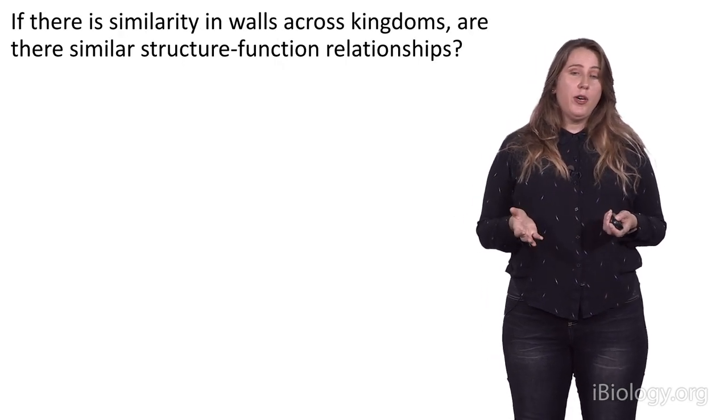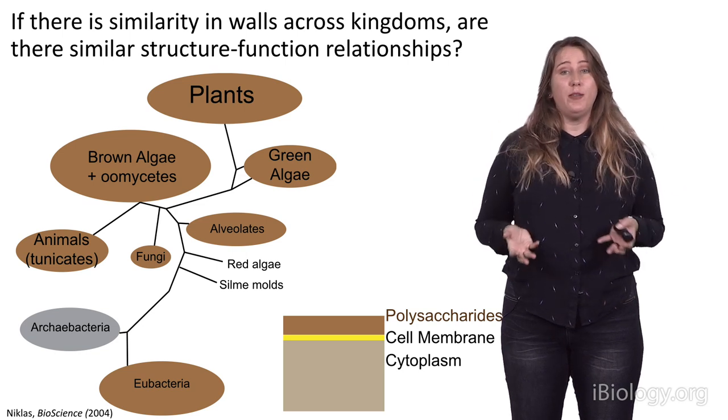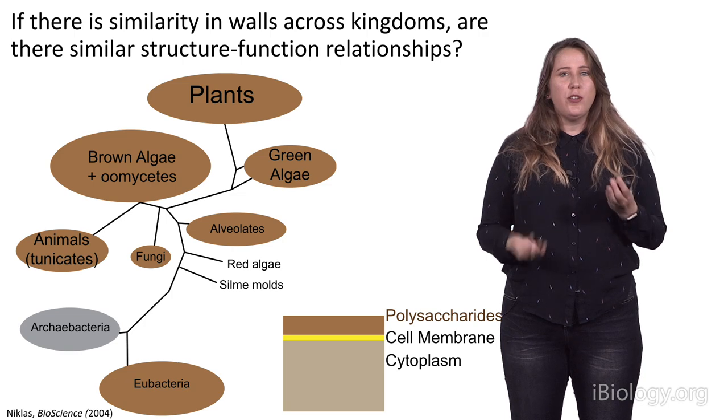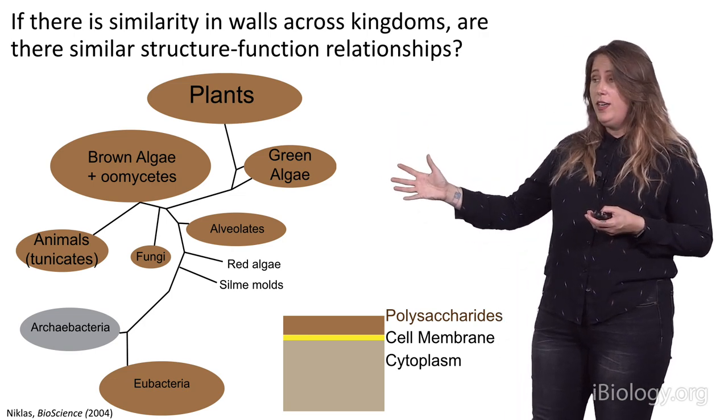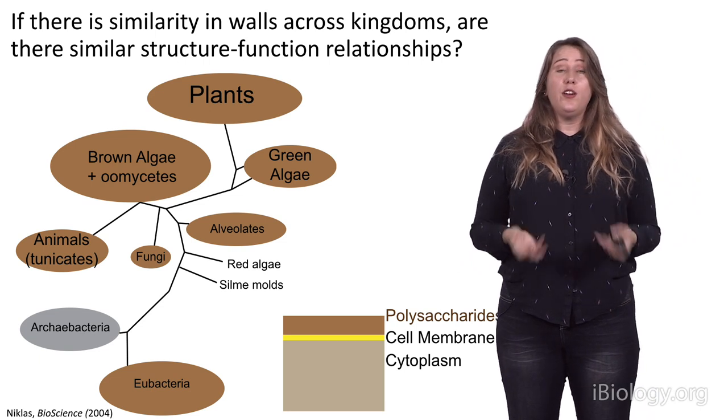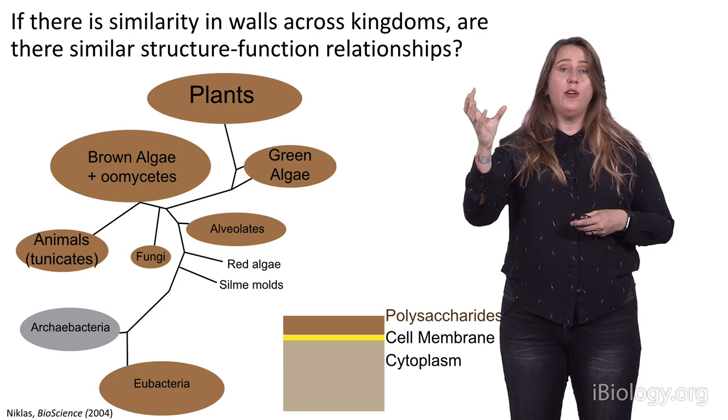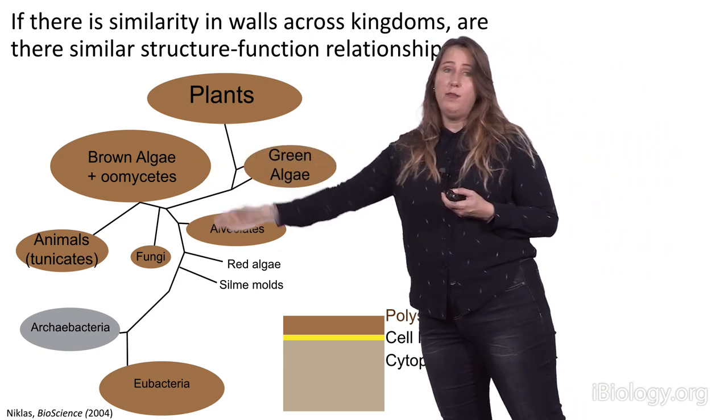But in the end, remember, we had cell walls with polysaccharide matrices across the kingdom of life. And so one of the questions that we might ask are, are there similar structure-function relationships that occur across this tree of life? And so that's what we'll try and address in the third part of the series, where we look at what we've learned about plant cell walls and how they regulate cell growth, and whether or not that's also true in brown algae or seaweeds.